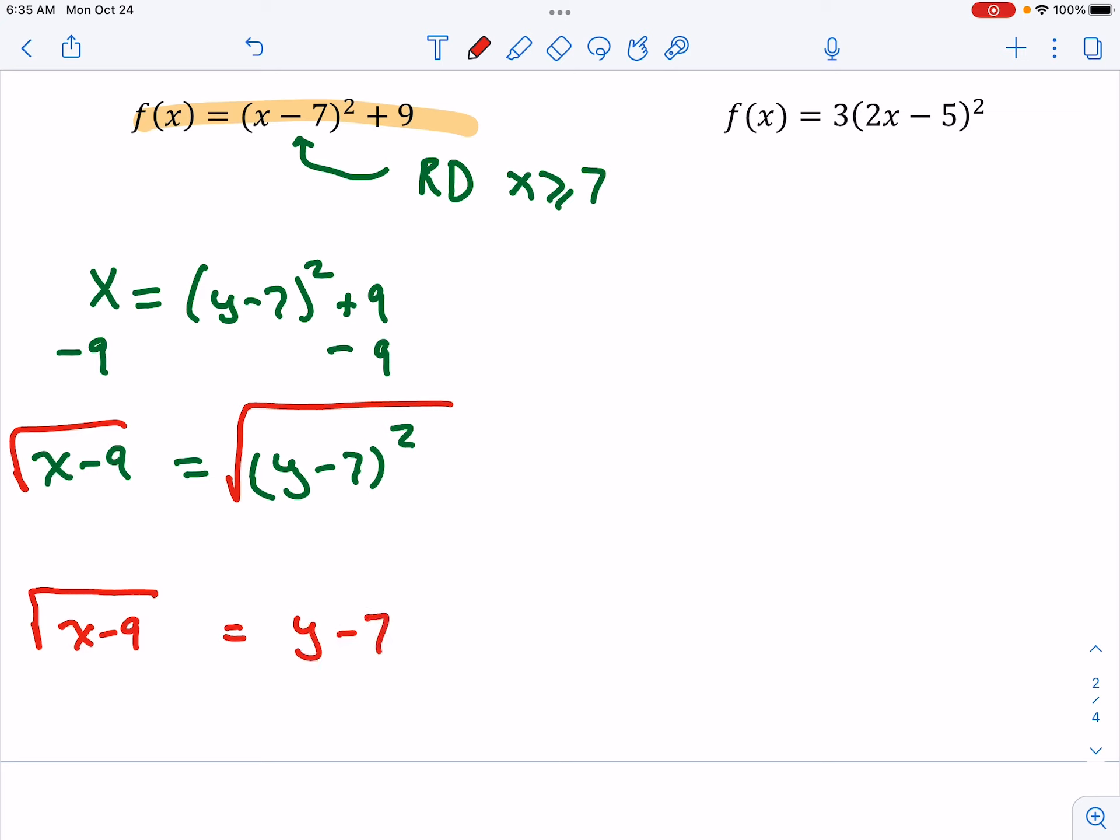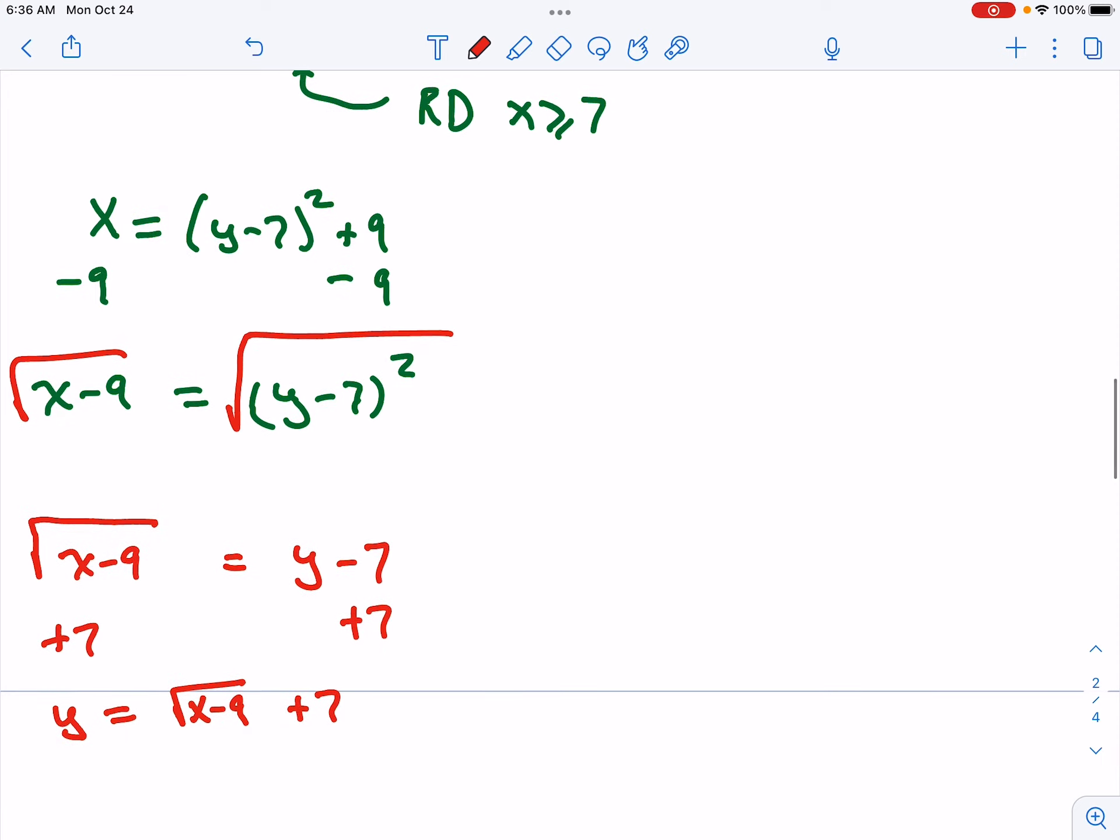Then we can take the square root of both sides. Normally when you take a square root you have a positive and a negative but because we restricted the domain we only take the positive square root. Now we get y by itself. And last of all we change the y to f inverse of x.